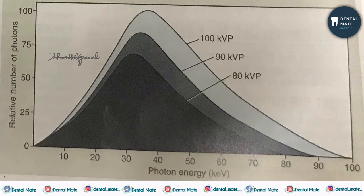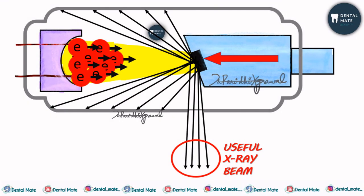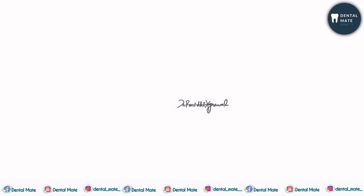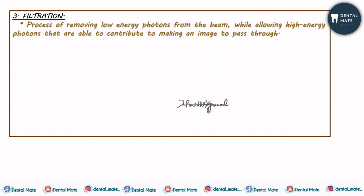Of the continuous spectrum of x-ray photons, only photons with sufficient energy penetrate through the anatomic structures and reach the image receptors, which could be either a digital image receptor or the x-ray film. The lower-energy photons that do not reach the receptors contribute to patient risk. Therefore, it is better to remove these lower-energy photons through a process called filtration — removing lower-energy photons from the beam while allowing high-energy photons that contribute to image formation to pass through.